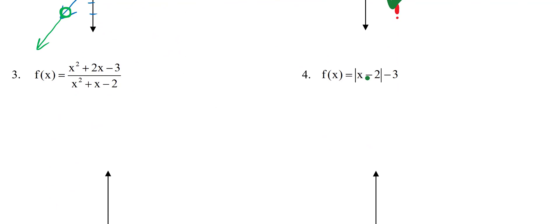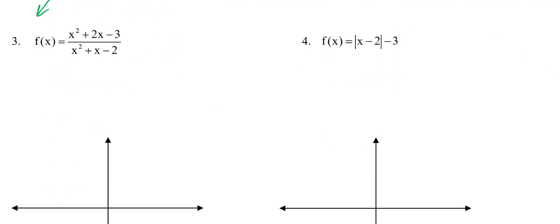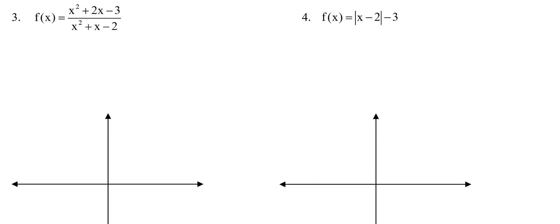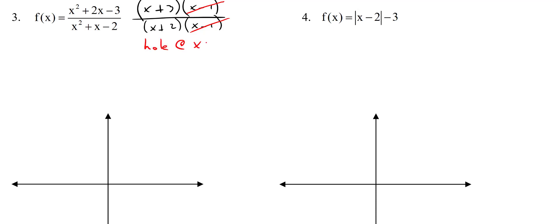This last rational function has a little bit of everything. First, I'm going to factor to see what I can cancel. The top factors, and on the bottom we get (x+2)(x-1). Right away you see something cancels — 'cancel hole.' So I know there's a hole at x = 1. Write that down immediately so you don't forget it. Now I'm really graphing the new function f(x) = (x+3)/(x+2).